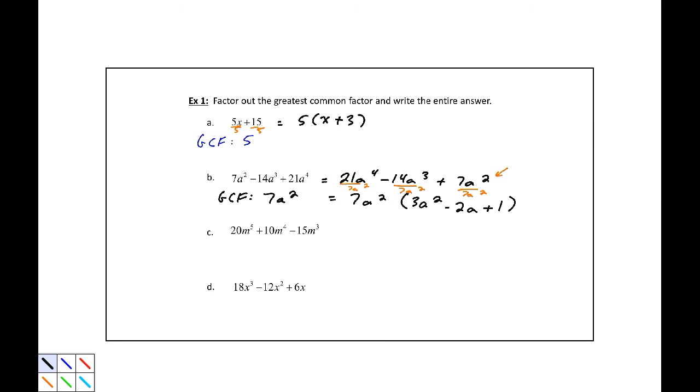Part C, 20m to the fifth plus 10m to the fourth minus 15m cubed. Well our greatest common factor, because this is already in standard form, number that divides into 20, 10, and 15. Five definitely goes into those, and actually nothing bigger. So just 5, and the smallest exponent we have is 3, so this would be m cubed.